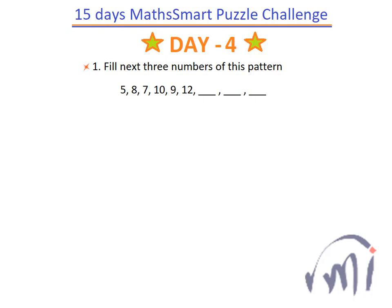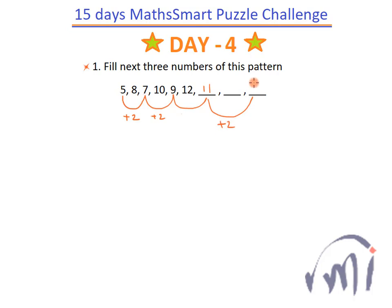So this is a number pattern. It's a very interesting but simple number pattern. Here you just have to see the alternate numbers. Each alternate number is 2 more than its previous number. 5 plus 2 is 7, 7 plus 2 gives you 9. So 9 plus 2 will give you 11 and 11 plus 2 will give you 13, which will come over here.